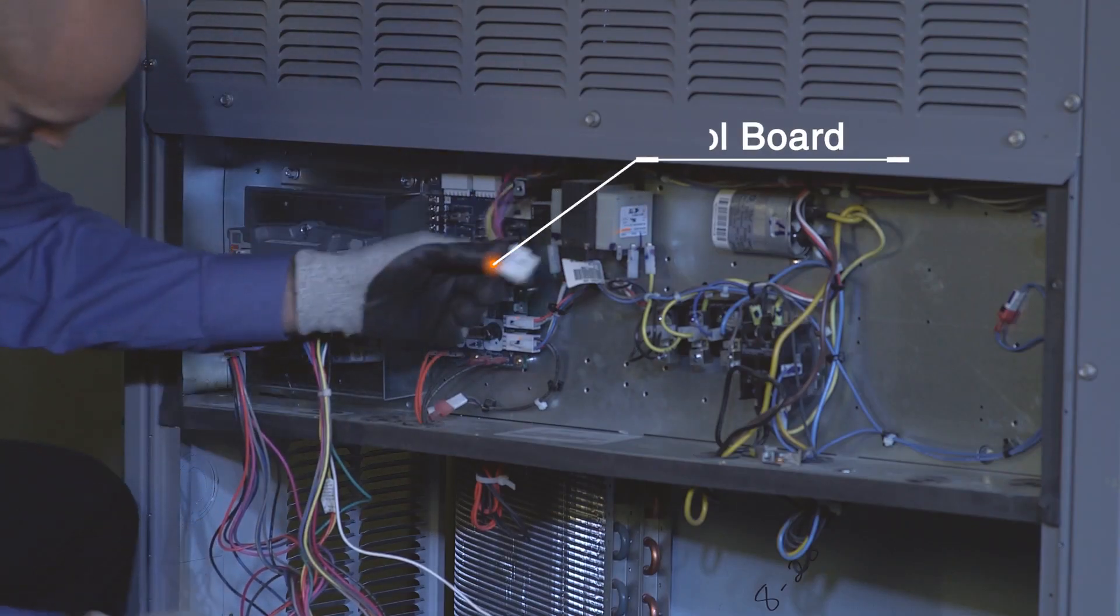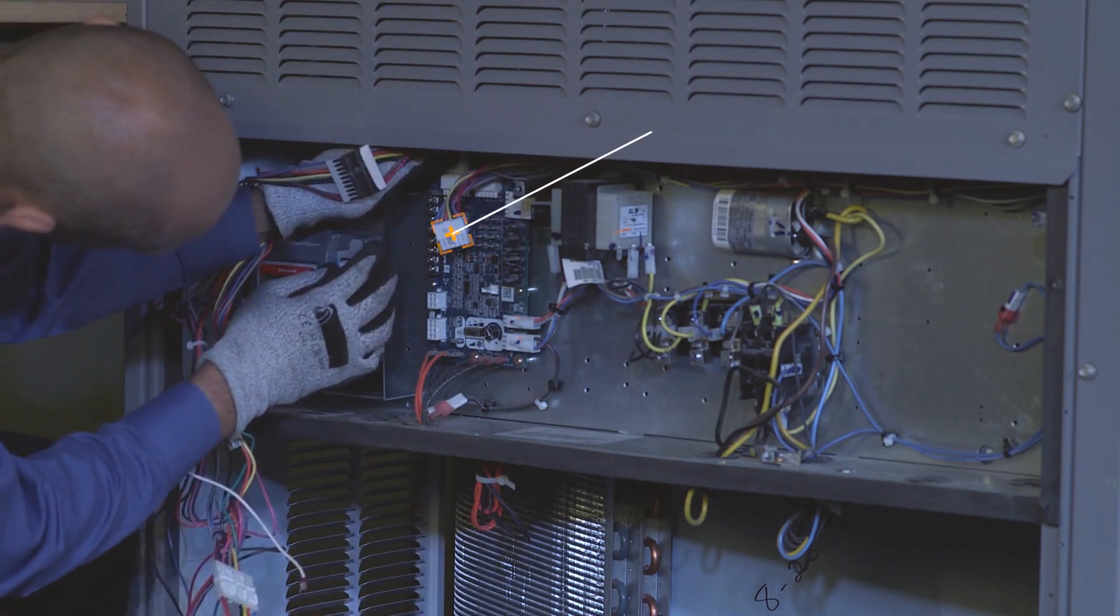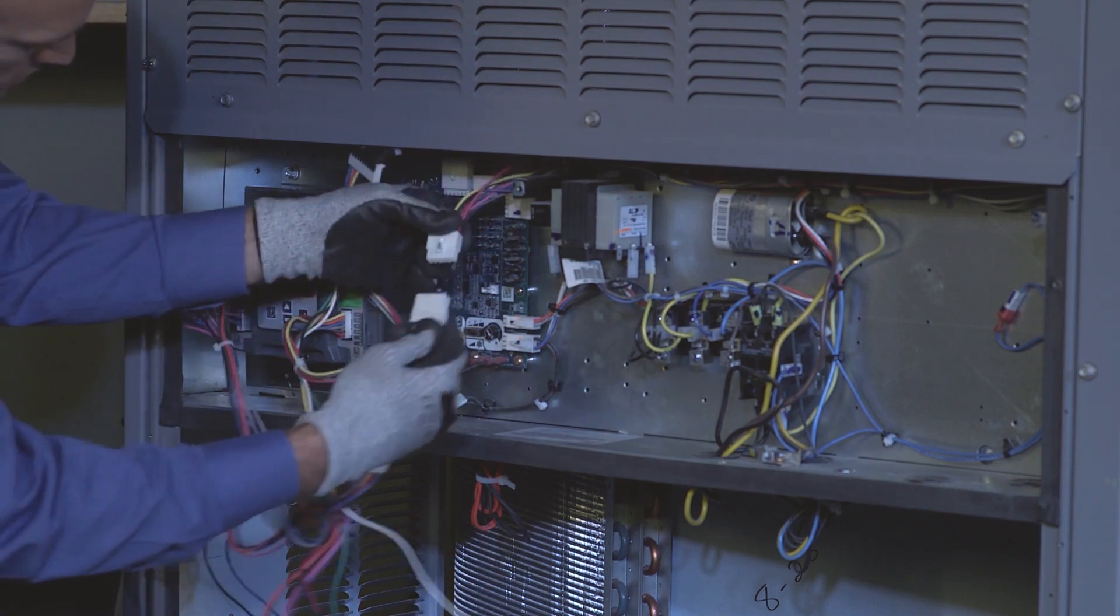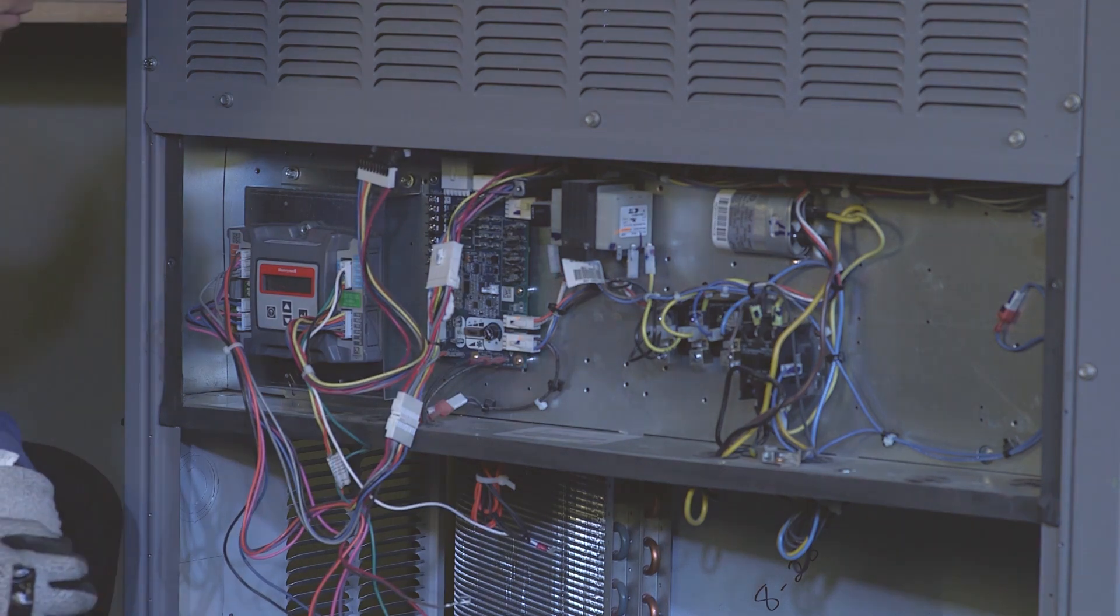Disconnect the 12-pin male plug from the unit control board and connect the 12-pin male from the W7220 in its place. Connect the 12-pin female plug from the W7220 to the male 12-pin plug.